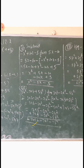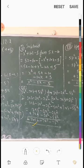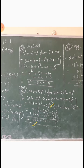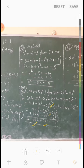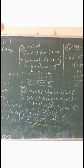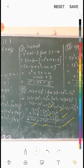3ab और 7ab — यह होगा 10ab। minus 2a² और minus 5a² — यह होगा minus 7a²। minus 2b² और minus 5b² — यह होगा minus 7b².